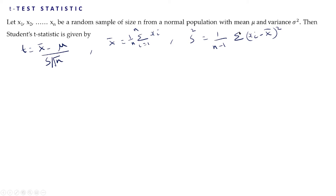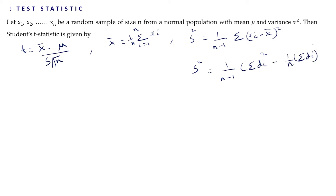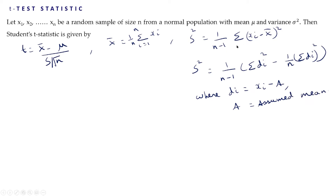Now, as we studied in class 11, how to find the variance of sample data. Using that formula we can find S² as (1/(n-1)) × [Σdi² - (1/n)(Σdi)²], where di = xi - a, and a is the assumed mean. This is a simpler method to find the variance, or to find Σ(xi - x̄)², using the assumed mean.